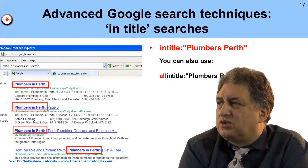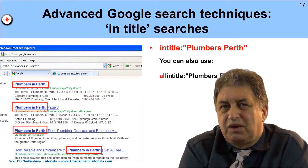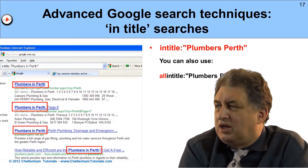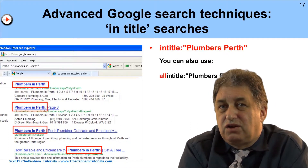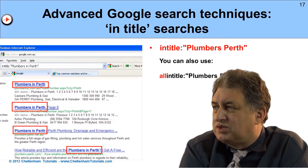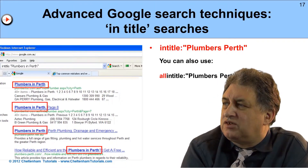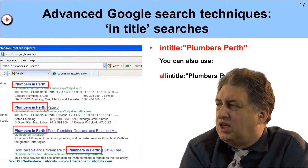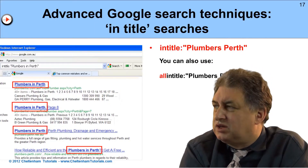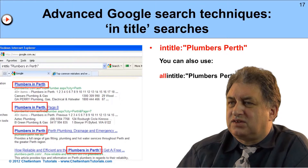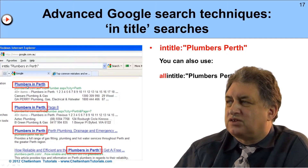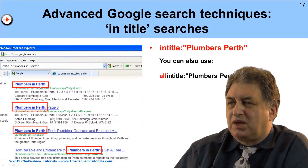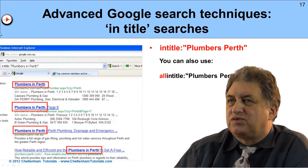We can use Google to do other searches. Taking the 'plumbers Perth' example, if you want to search for those words within the title of search engine results, simply use the syntax 'intitle:' followed by 'plumbers Perth' - optionally in inverted commas. As you can see in this example, it shows up a number of web pages that have that exact phrase in their title.